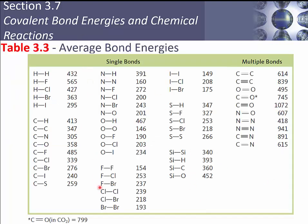Different bonds have different energies. Bond energies are the energy it takes to break a bond, or the energy released when that bond forms. An H-H bond takes 432 kJ/mol to break. A carbon-carbon single bond is 347 kJ/mol, a double bond is 614, and a triple bond is 836. More bond order means more energy, but it doesn't double or triple proportionally — the incremental energy gain decreases as bond order increases. The same trend applies to carbon-nitrogen and carbon-oxygen higher-order bonds.